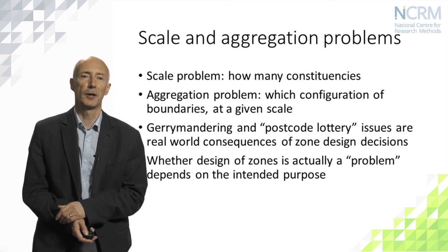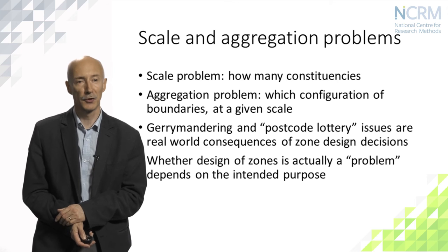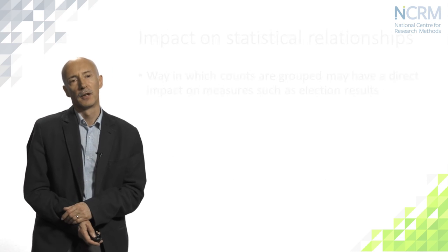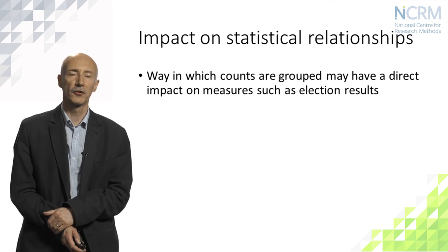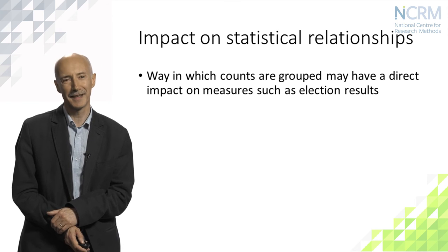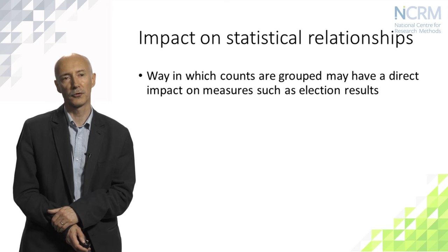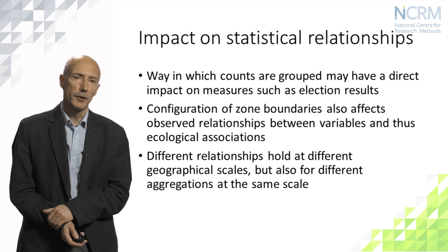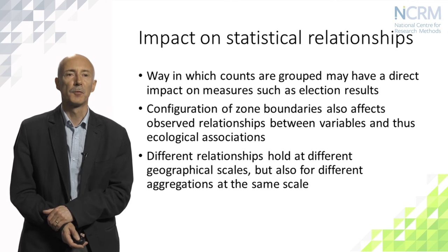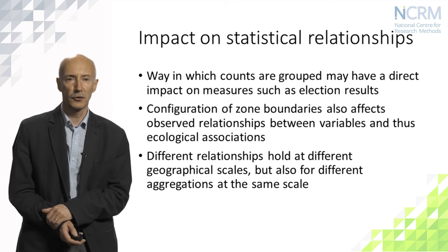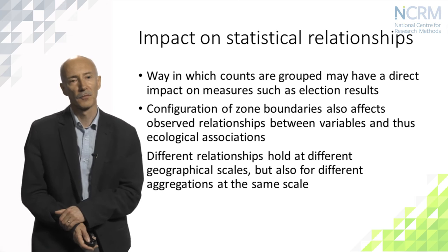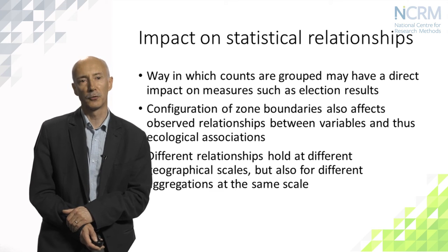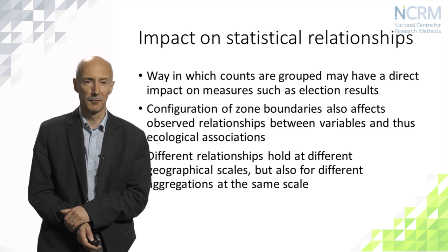Whether the design of zones is actually a problem depends on the intended purpose. One final area I'd like to highlight is that zonation can also have an impact on the statistical relationships we see in data, and this is perhaps the biggest implication for social science research. The way in which counts are grouped into zones will affect any kind of ecological associations and any kind of ecological analysis we want to perform on those data, because different relationships are likely to hold at different geographical scales and we may also describe them differently when we re-aggregate at the same scale.